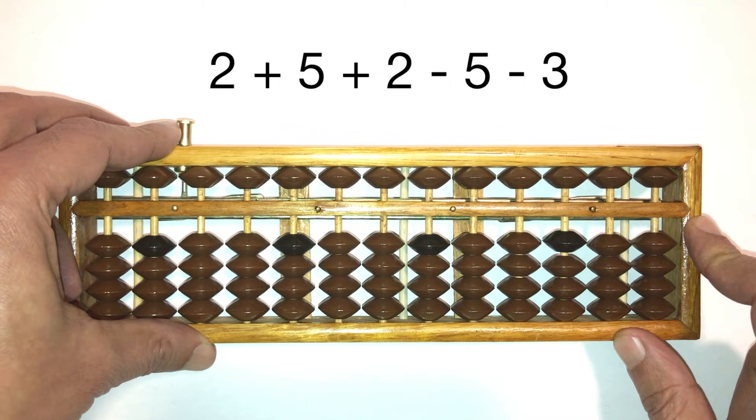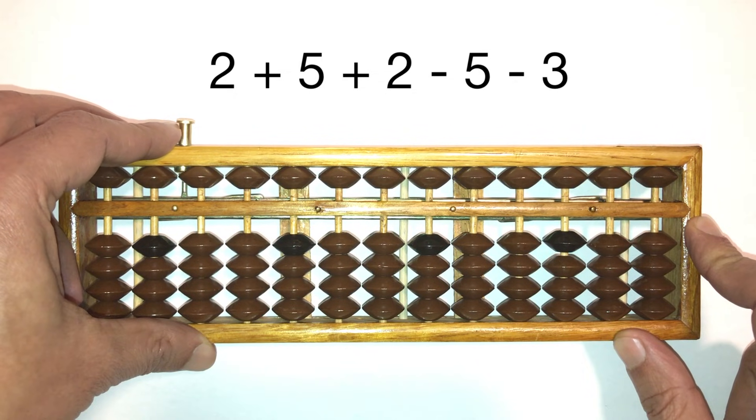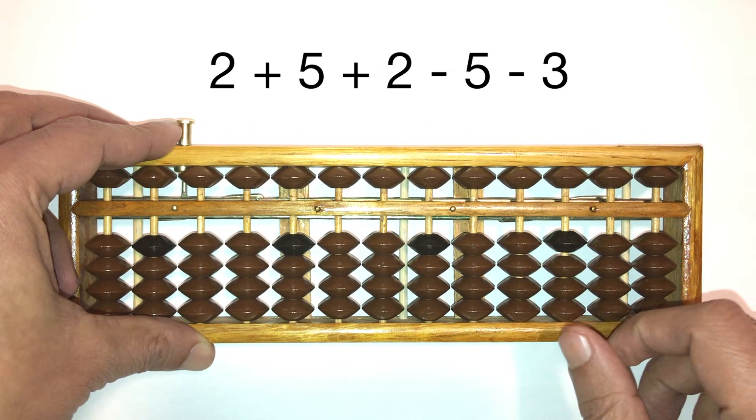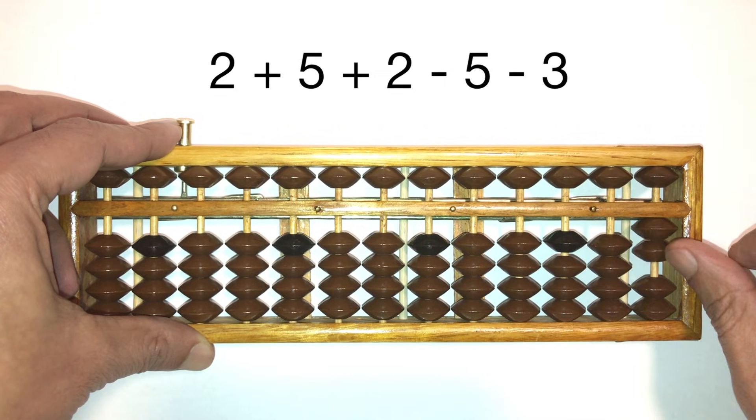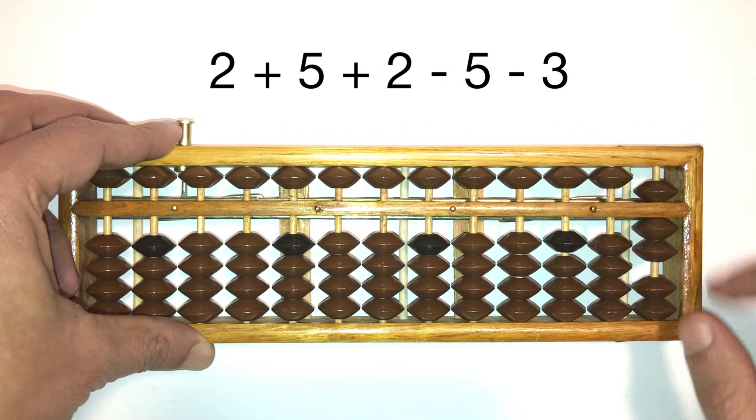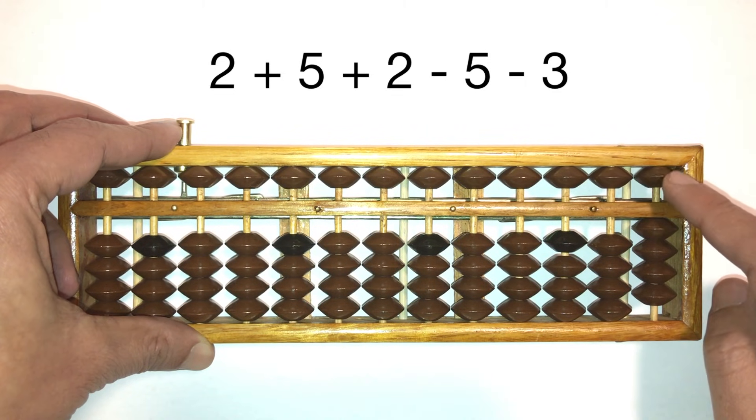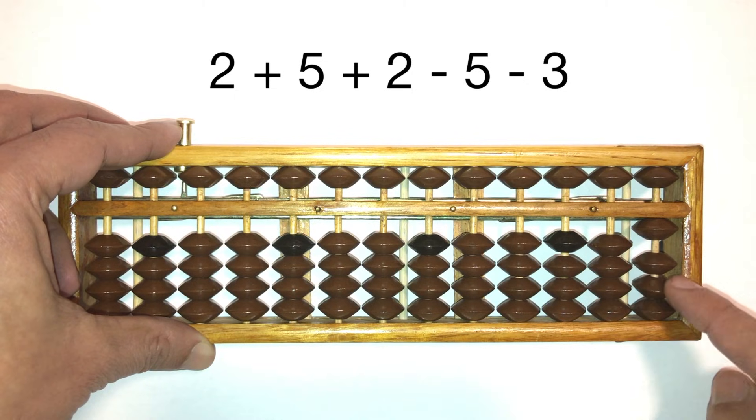So let's pay attention to how we're using our fingers to solve this question on the Abacus. So here we go. So let's do 2, plus 5, plus 2 with our thumb, minus 5 with our pointer, minus 3 with our pointer.